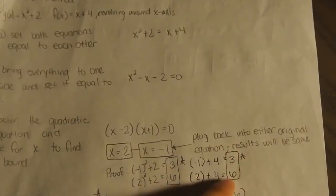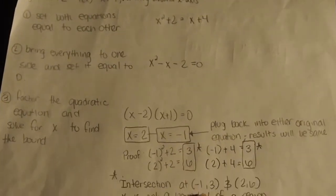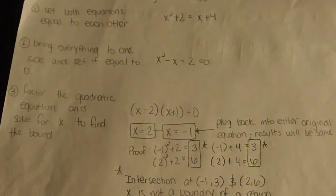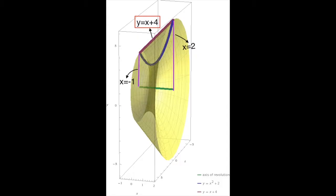After factoring, we find that x equals 2 and x equals negative 1. Plugging both back into either original equation gives the points (−1, 3) and (2, 6). We make sure these points are not boundaries of a separate region so the washer method can be used. With bounds negative 1 and 2 — since we're revolving around the x-axis, our bounds are in terms of x: x equals negative 1 to x equals 2.